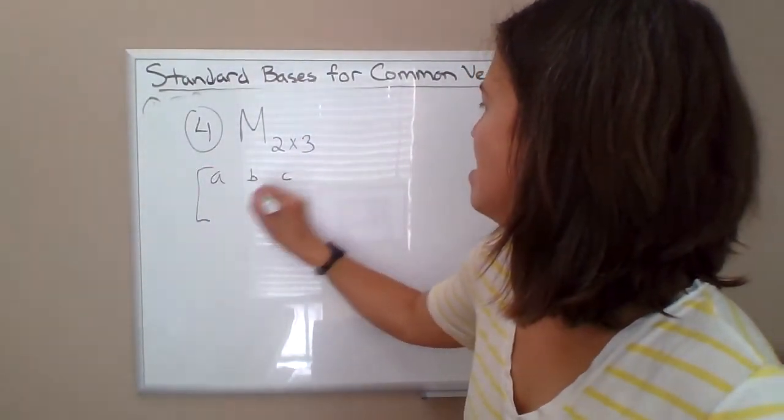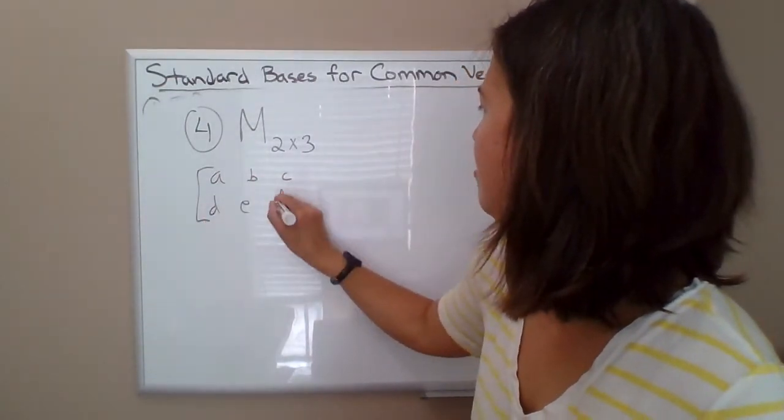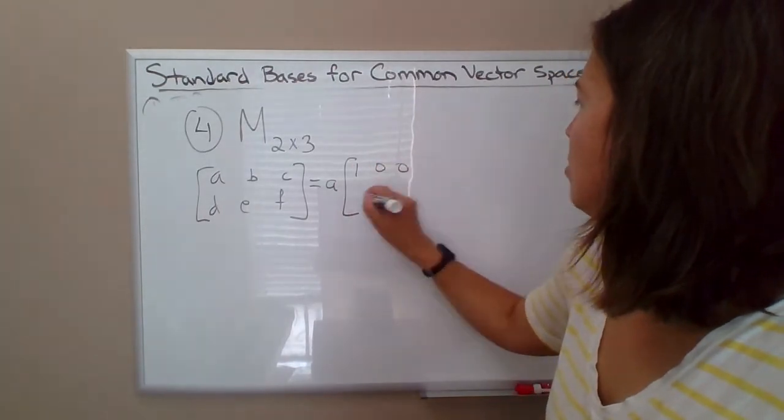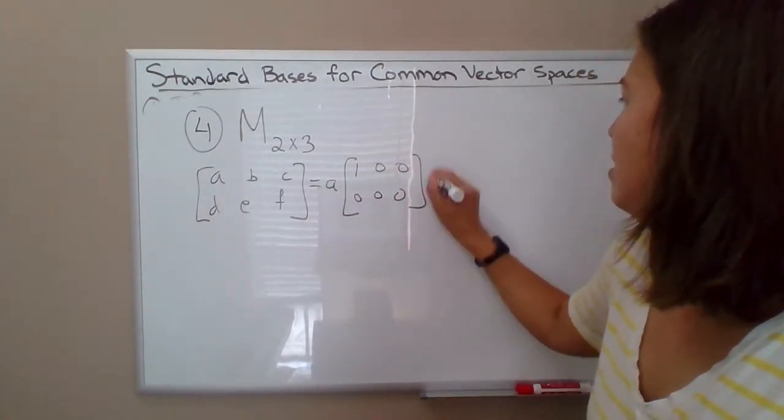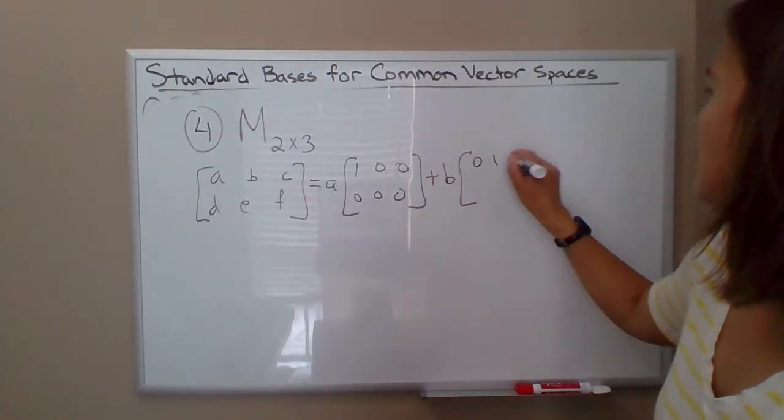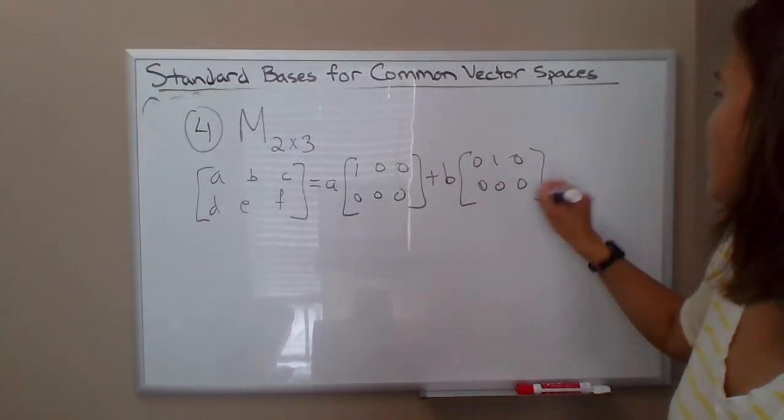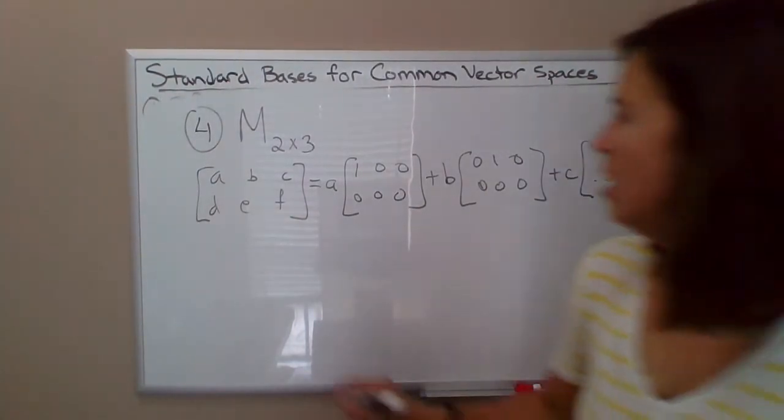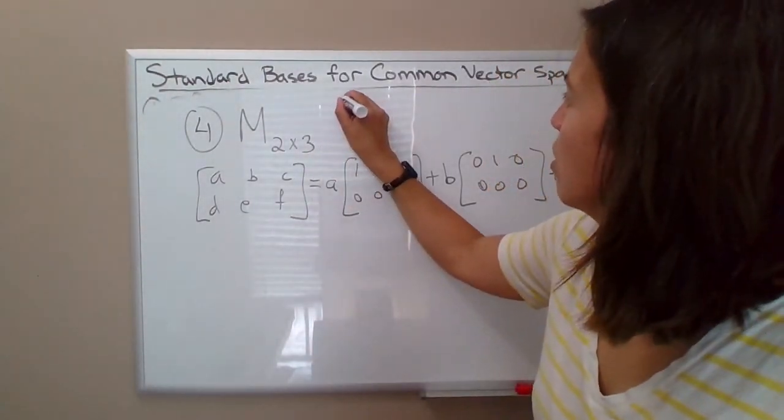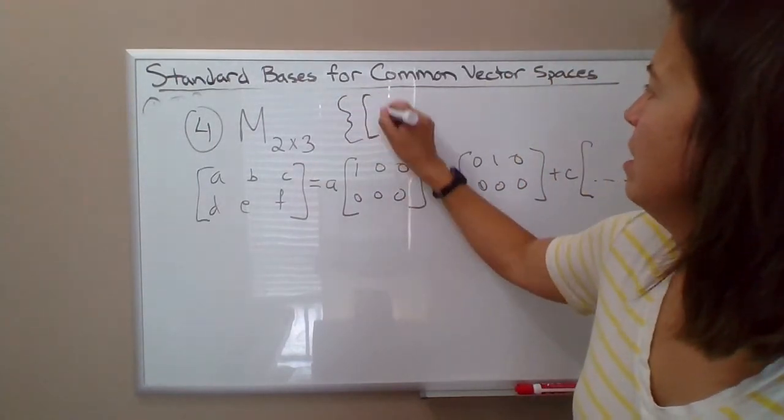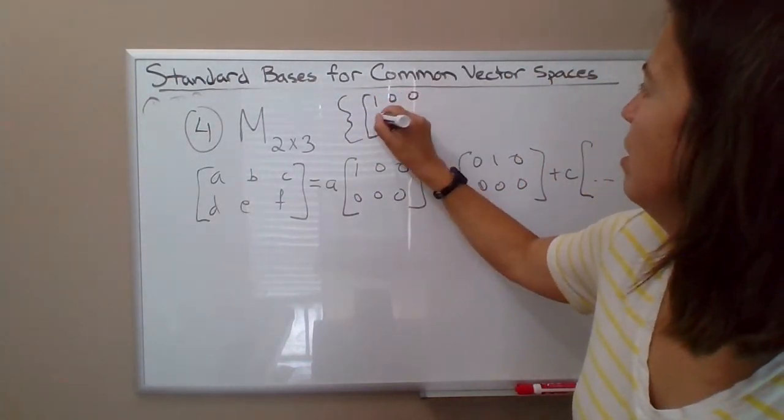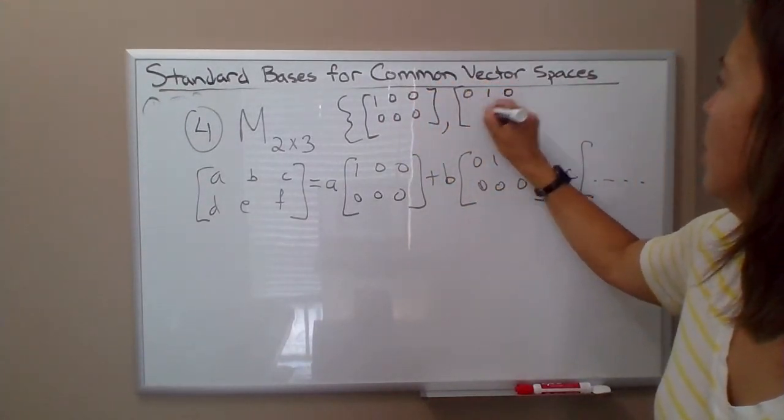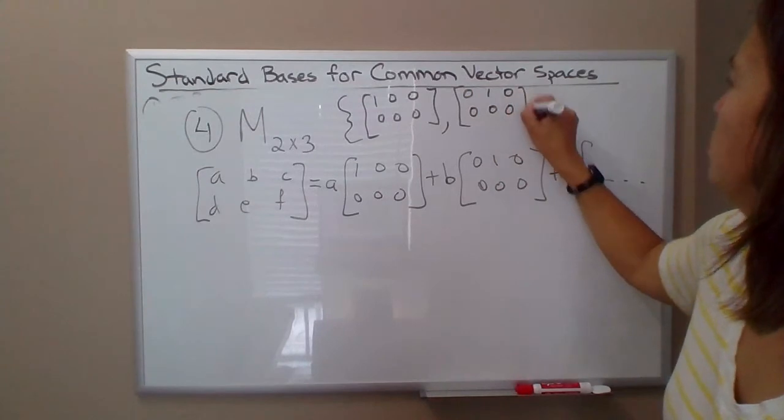So anything in M two by three is going to have this form. So A, B, C, D, E, F, which means you could write this as A times this matrix plus B times this matrix, plus C times... You get the idea. So a standard basis for M two by three is just kind of think of it as your unit matrices. So where you put one in each position, one at a time, you'll have, you'll end up with six total matrices here.